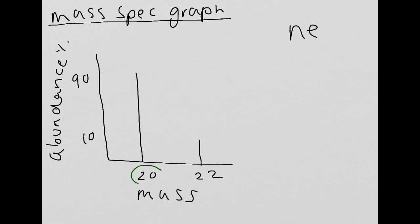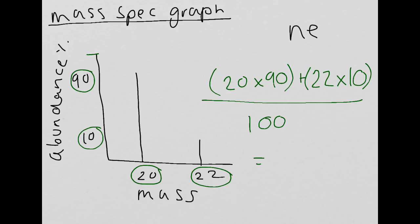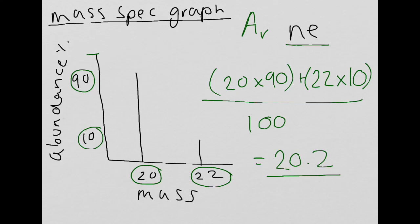So, doing the calculation: 20 times 90, plus 22 times 10, then divide by the total 100%, gives us the relative atomic mass of neon, which equals 20.2. This is how we use the mass spectrometer to identify unidentified elements — if we look up 20.2 as a relative atomic mass on the periodic table, we'll be able to find it, and it is neon.